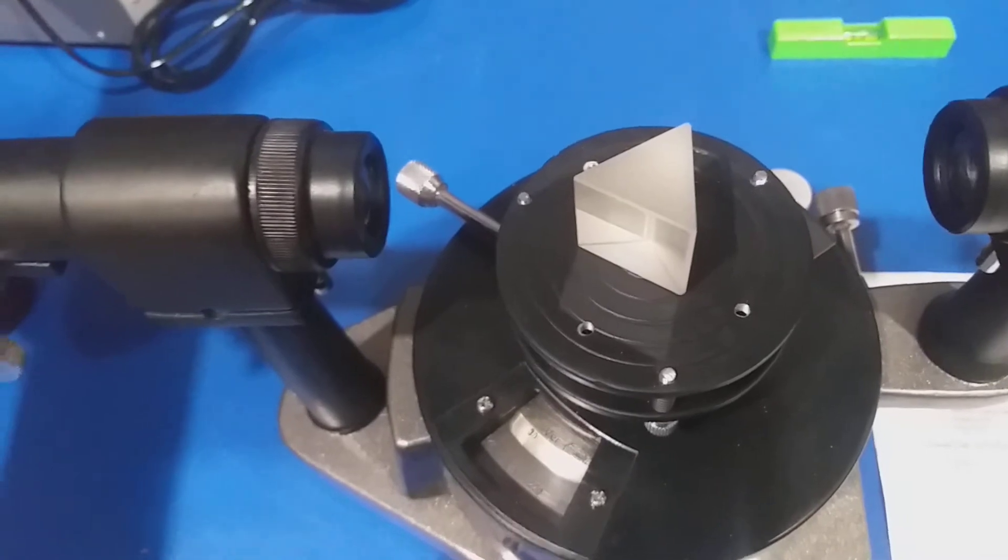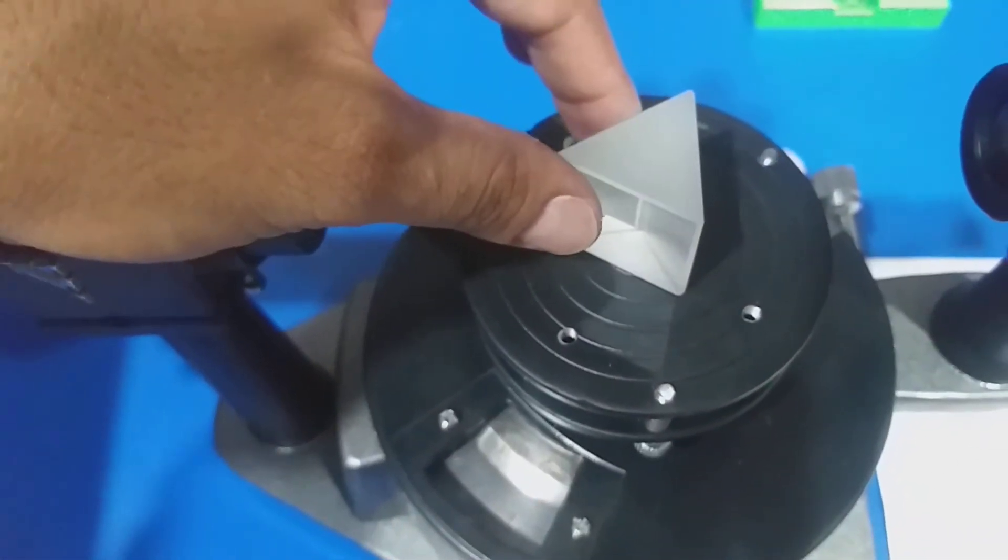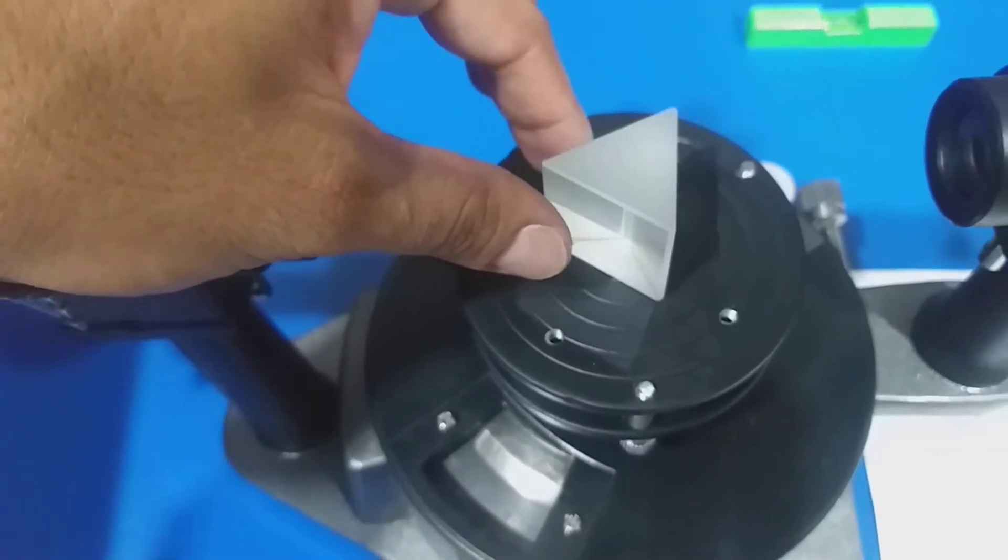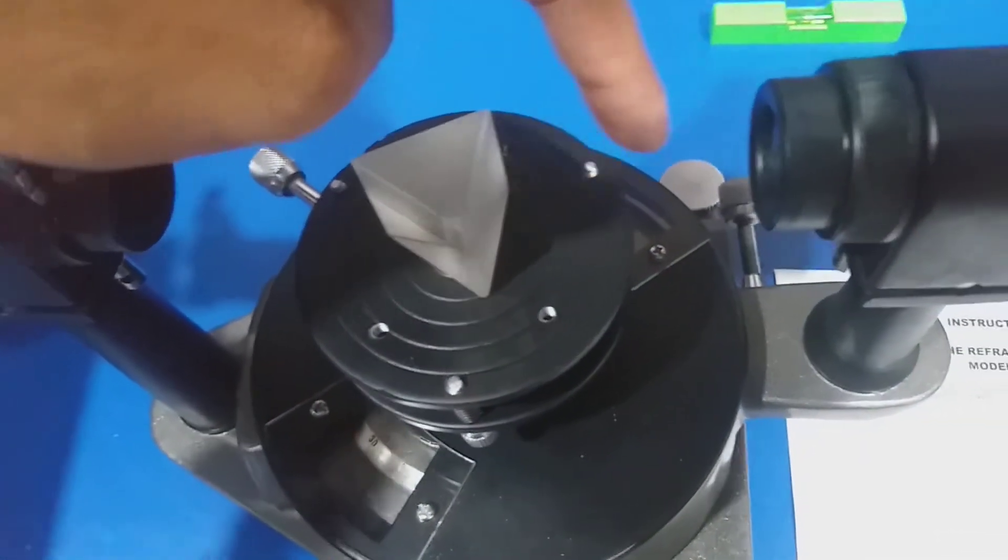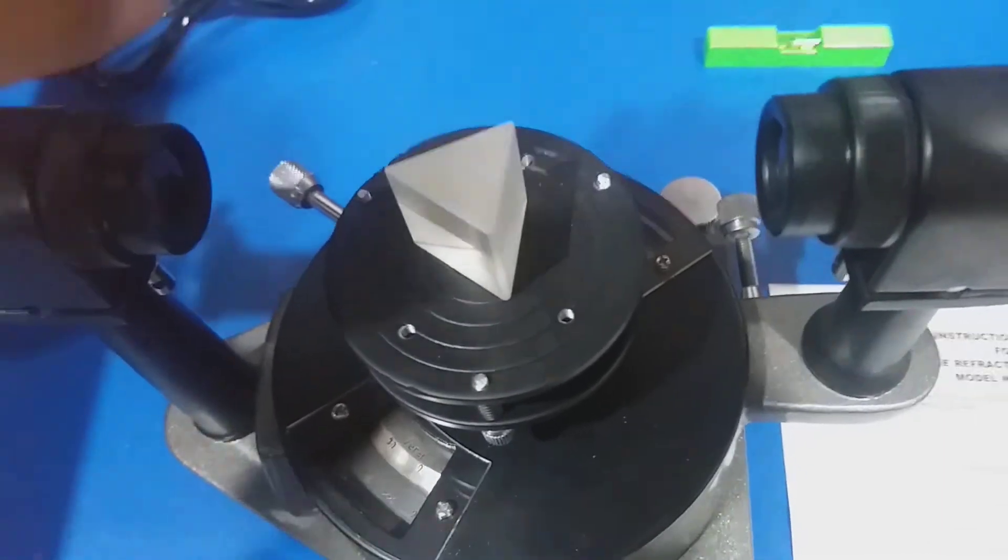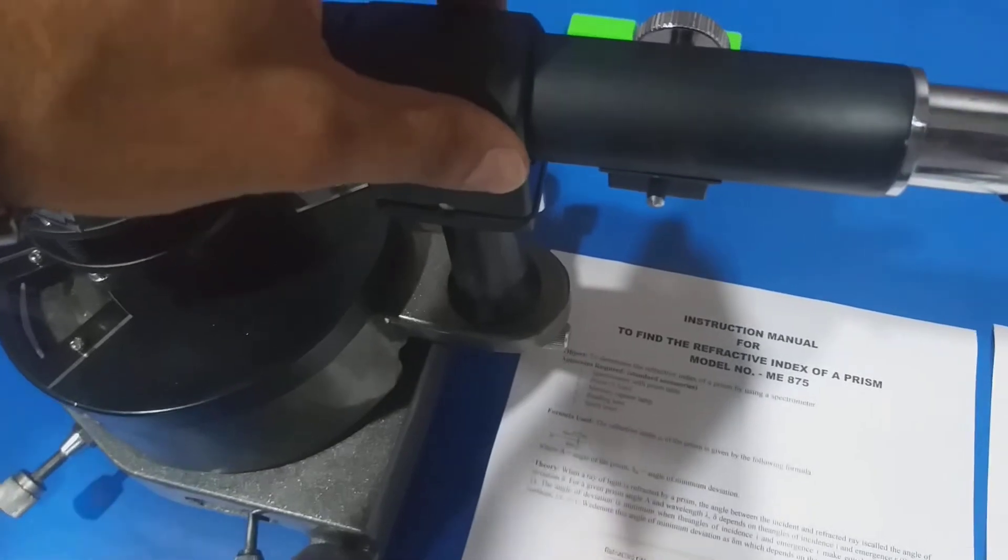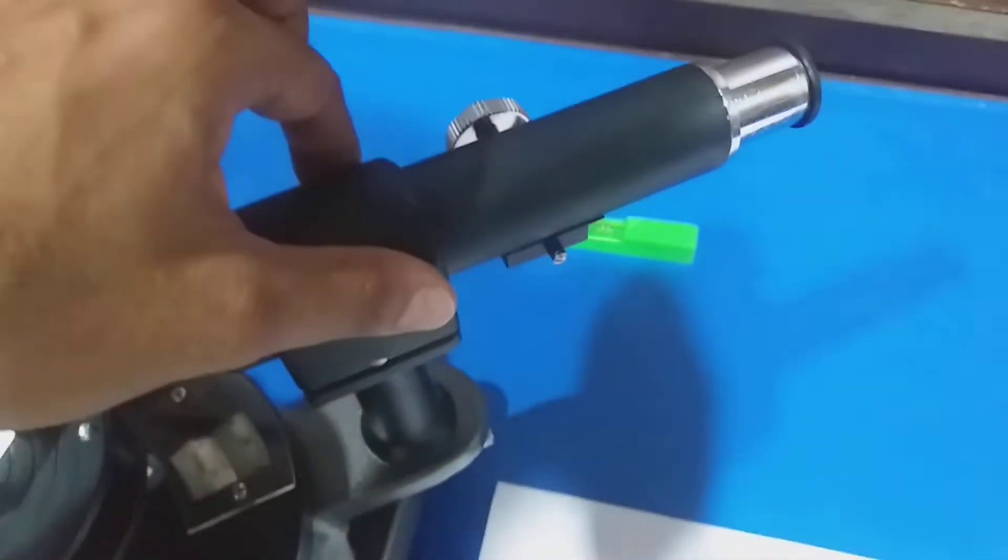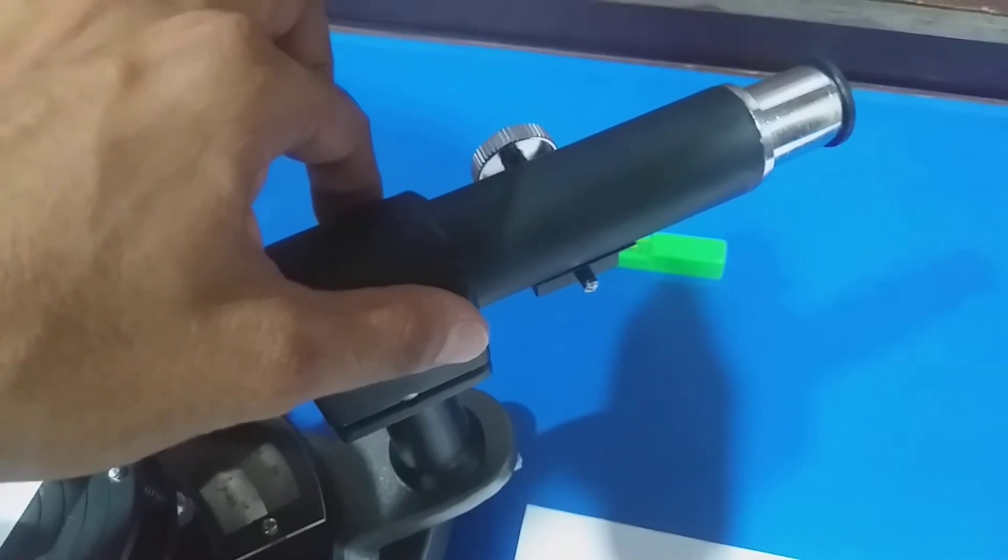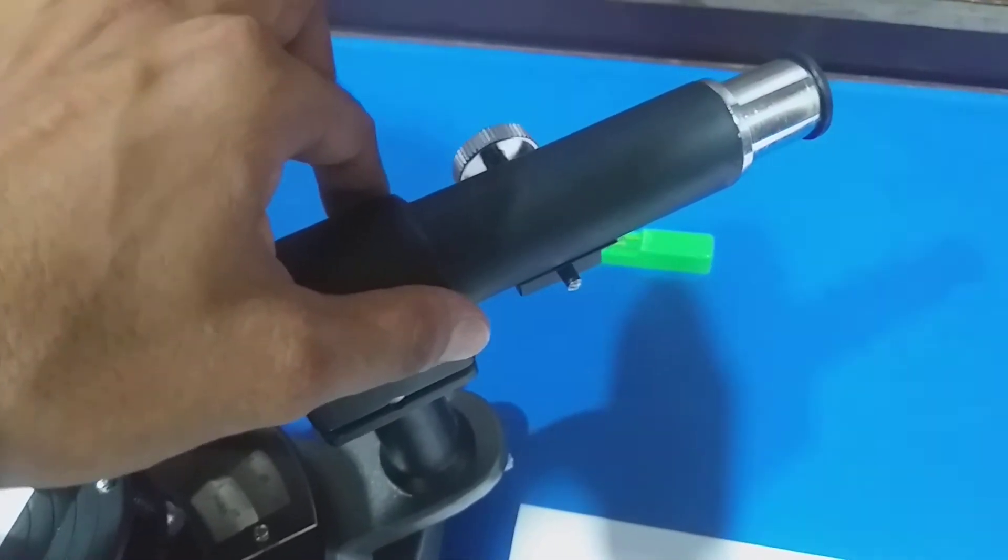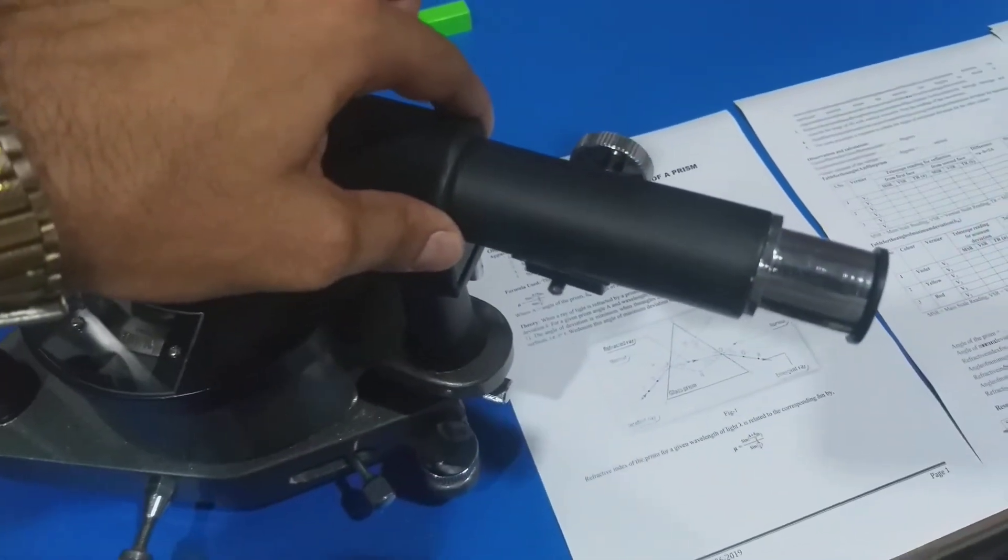In case of angle of prism, we set the prism as shown in the video with the rough face towards the eyepiece, and we can observe the slit of light at an angle of approximately 59 to 60 degrees here and here.